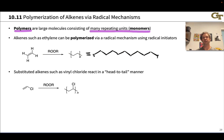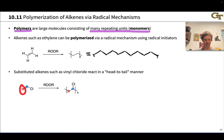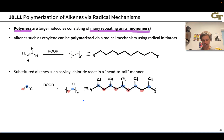Substituted alkenes also react in these polymerization reactions. Vinyl chloride is one important example, and in 2023, vinyl chloride has been in the news in a big way. These polymerize in what we might call a head-to-tail manner. If you imagine the blue carbon is the head — the one connected to Cl — and the red carbon is the tail, then blue links to red and red to blue alternatingly, in a very consistent way.